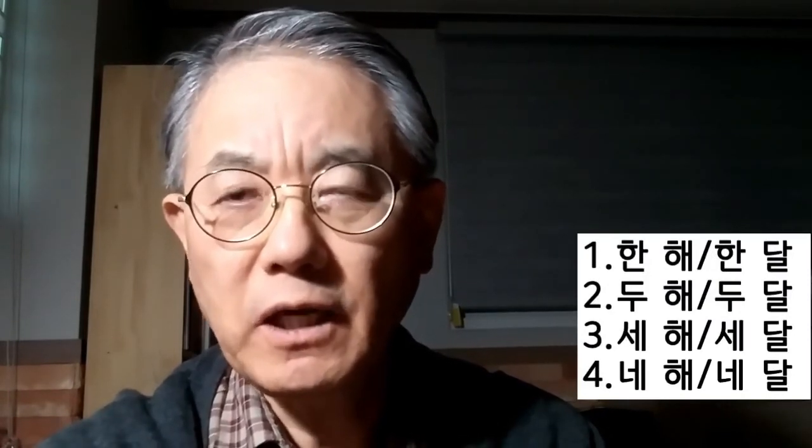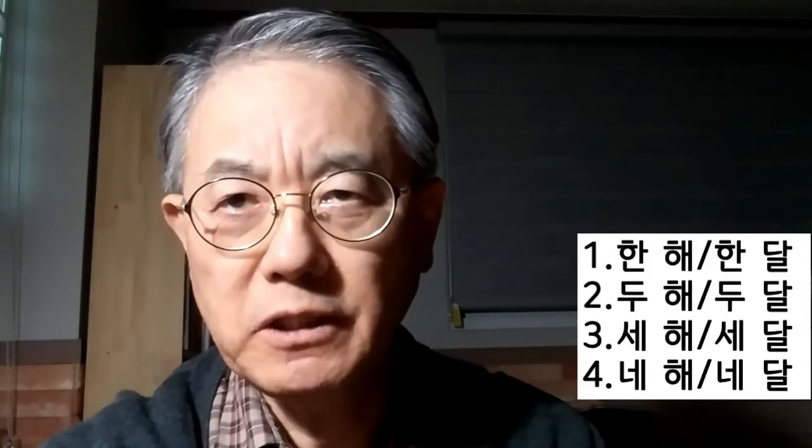Before a noun, Korean numbers 하나, 둘, 셋 conjugate to 한, 두, 세, 네. So you say 한 해, 두 해, 세 해, 네 해. And for months: 한 달, 두 달, 세 달, 네 달.